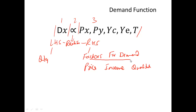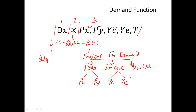There are three types of factors of demand. Within the price category, the price of x itself can impact the quantity demanded of x, and the price of y, where y is a related good, also influences the quantity demanded of x. For income, yc is the current income and ye is the expected income — both impact the quantity demanded.